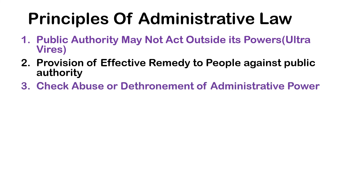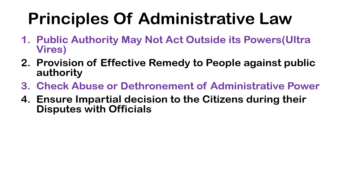Check abuse or curtailment of administrative power. The main objective of administrative law is to control the misuse of public authority by public officials. Public authorities exercise rights related to dispute settlements, formulation of laws and regulations, policies, as well as executive or administrative right of their implementation. Administrative law controls misuse of authority through administrative, political, and legal process. Ensure impartial decisions to the citizens during their disputes with officials.